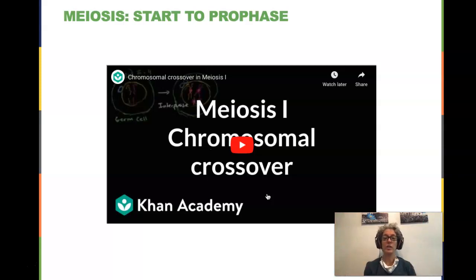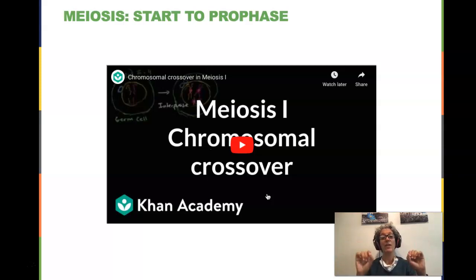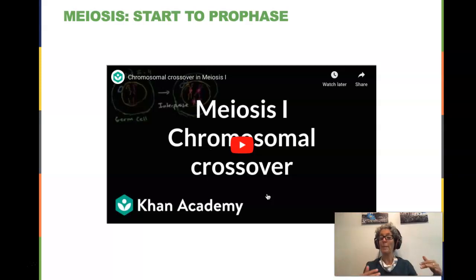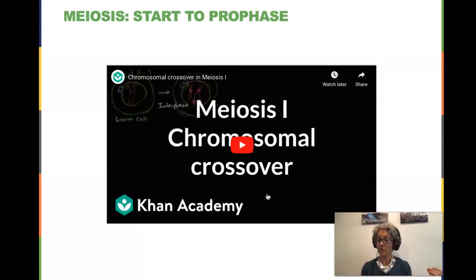After anaphase comes telophase. The nuclear membrane forms around each group of chromosomes — that still happens in telophase I. Cytokinesis will split us into two cells. Then as we move into meiosis II, those two cells formed in meiosis I are going to undergo a division that looks exactly like mitosis, but it's not the same because what has happened to the chromosomes is not the same.